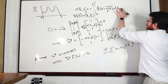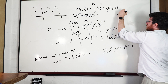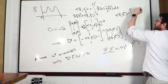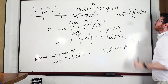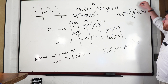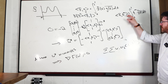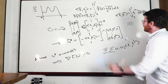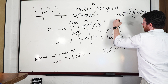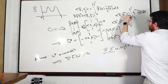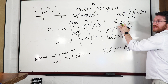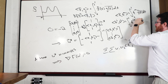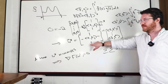The inner product of f with t^m is the integral from 0 to 1 of t^m times f(t) dt — that is the m-th moment of f. This is what we consider our data. The gram matrix entries are the inner products of t^i and t^j: the integral from 0 to 1 of t^(i+j) dt.